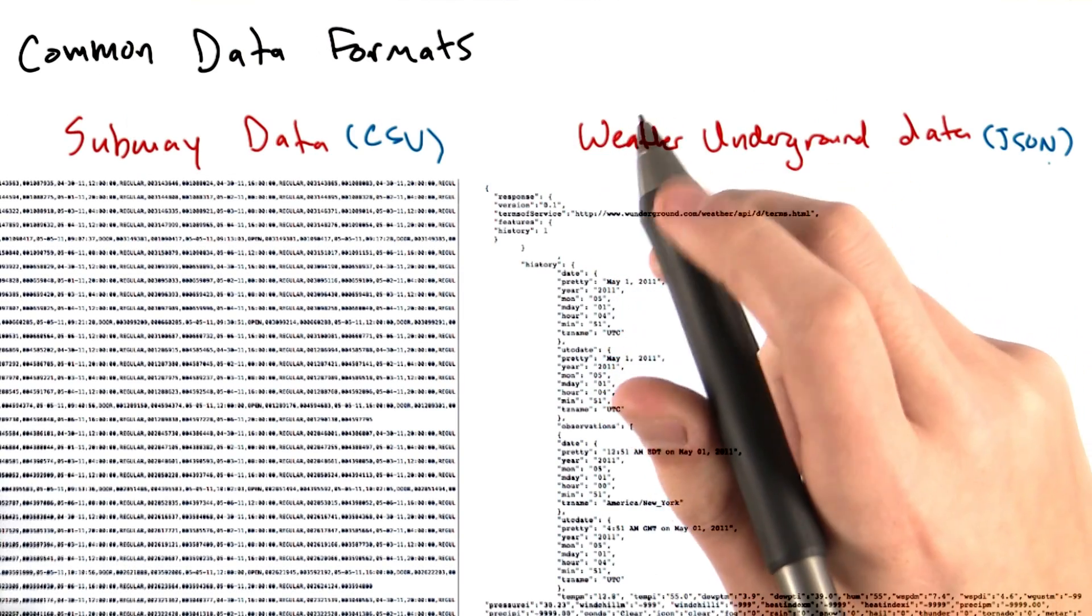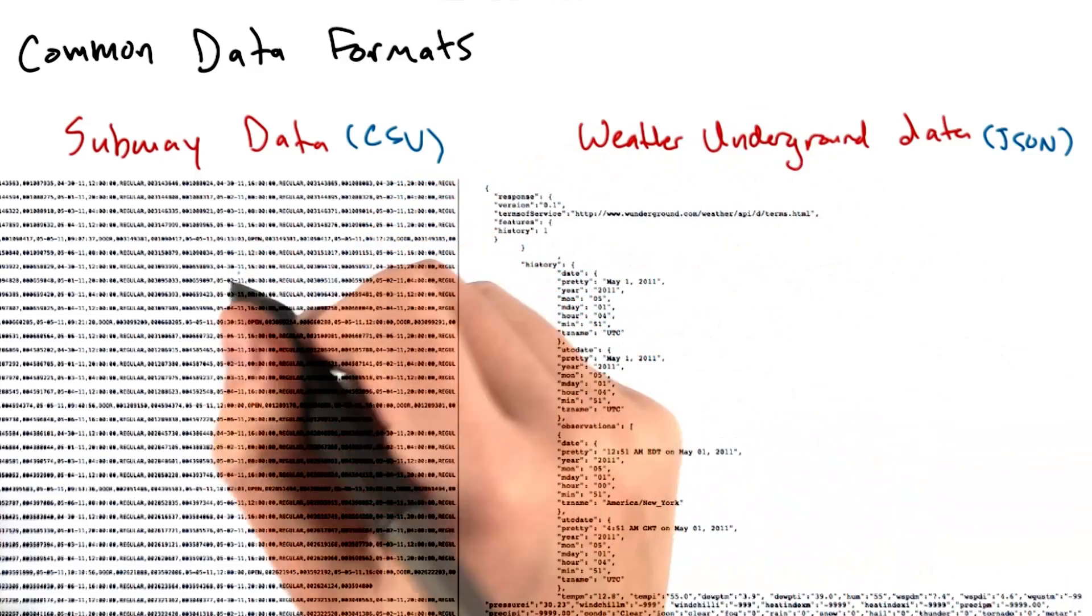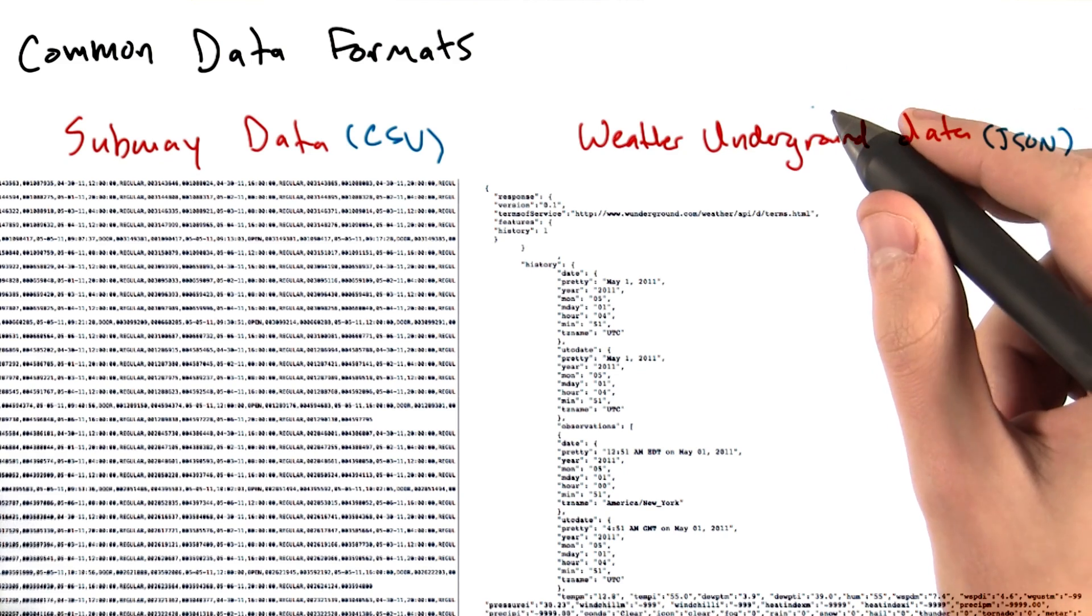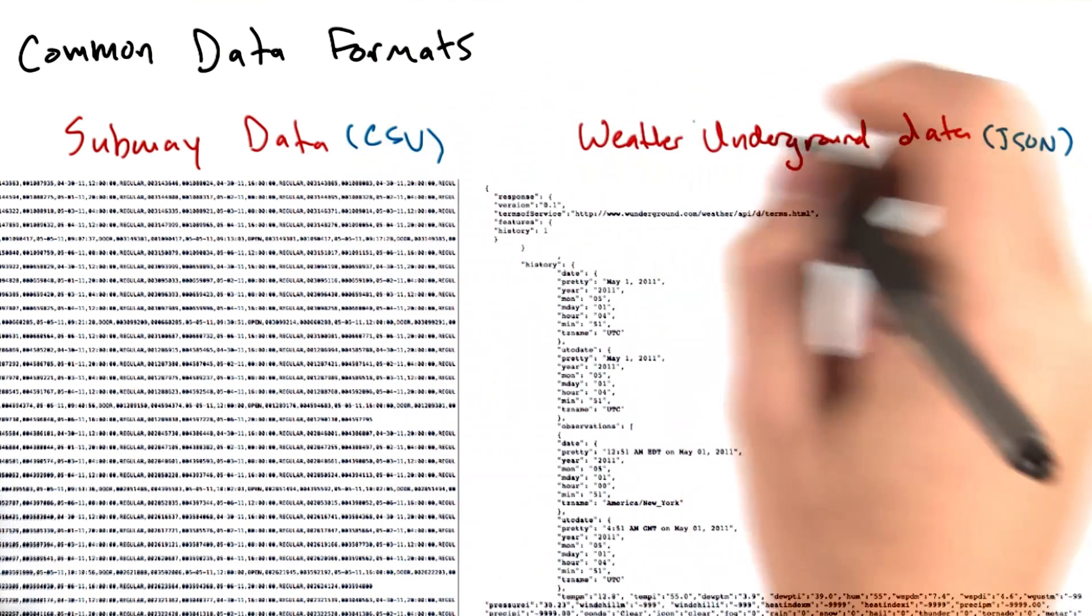Since the online MTA subway data comes in CSV format, and the Weather Underground API responds to requests with a JSON object, we'll discuss how to load and process files in these two formats.